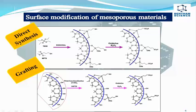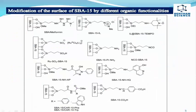Many researchers have focused on the preparation of organic functionalized materials to expand the applications by either direct incorporation of organic groups through co-condensation or grafted organic groups onto the surface of the mesoporous silica. Therefore, organic functional groups such as amine, thiol, carboxylic, alkyl chloride, and aromatic compounds have been incorporated into the structure of mesoporous materials.